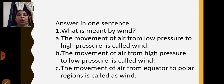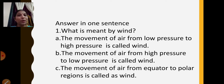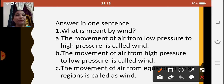Next we have answer in one sentence: 'What is meant by wind?' Three options are given. Option A: movement of air from low pressure to high pressure. Option B: movement of air from high pressure to low pressure. Option C: movement of air from the equator to polar regions. Winds blow from high pressure to low pressure, so the correct answer is option B — the movement of air from high pressure to low pressure is called wind.